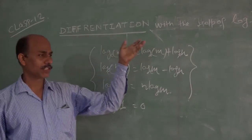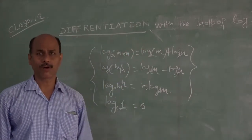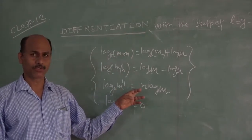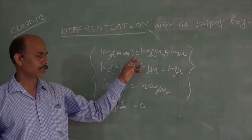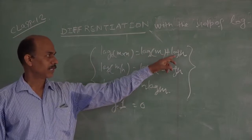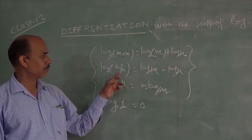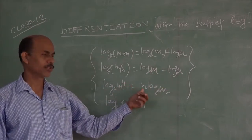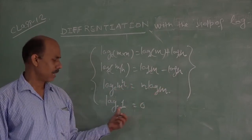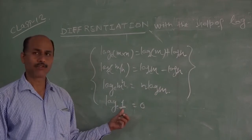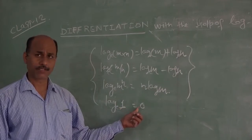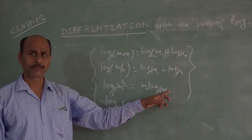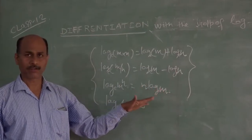The third one is differentiation with the help of log. So first I am giving you some rules of log that you are supposed to use. First is log(m × n), written as log m plus log n. Second is log(m/n), written as log m minus log n. Third is log(m^n), written as n·log m. So these are the three basic rules that we have to use if required by a particular question.